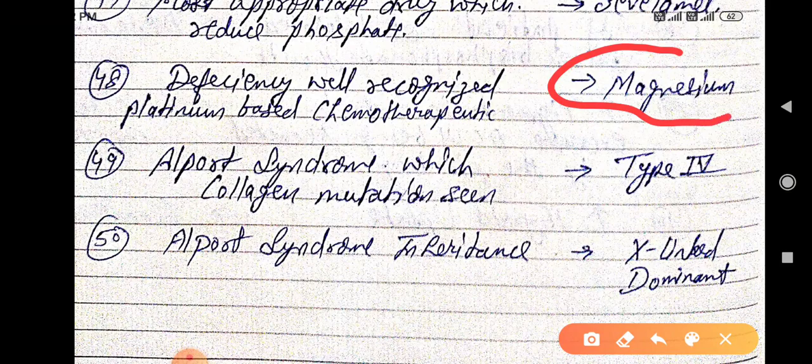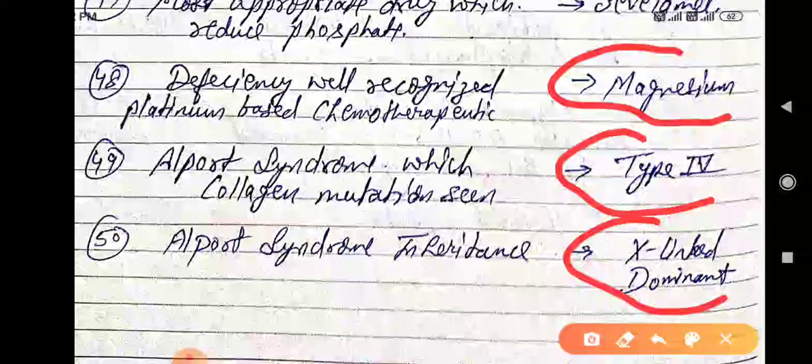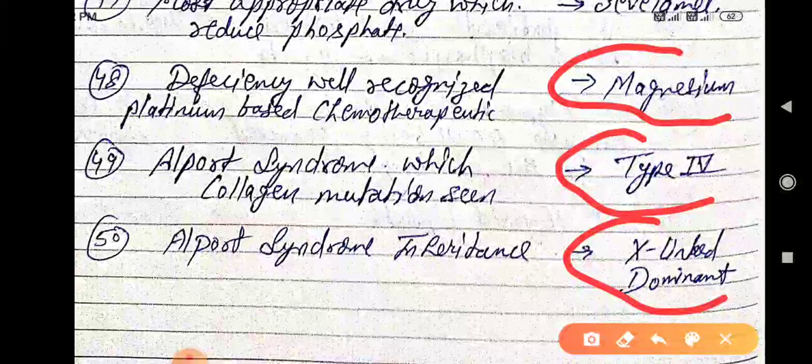Alport syndrome. Which collagen mutation is seen? Type 4. Alport syndrome inheritance is autosomal dominant. It's X-linked dominant. Remember Alport syndrome inheritance is X-linked dominant.